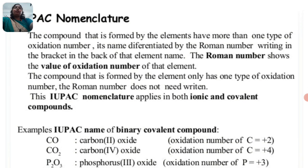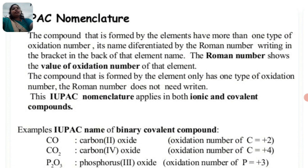The compound that is formed by an element that has only one type of oxidation number does not need the Roman number written. For elements that have only one type of oxidation number, there is no need to use Roman numerals. IUPAC nomenclature applies to both ionic and covalent compounds.